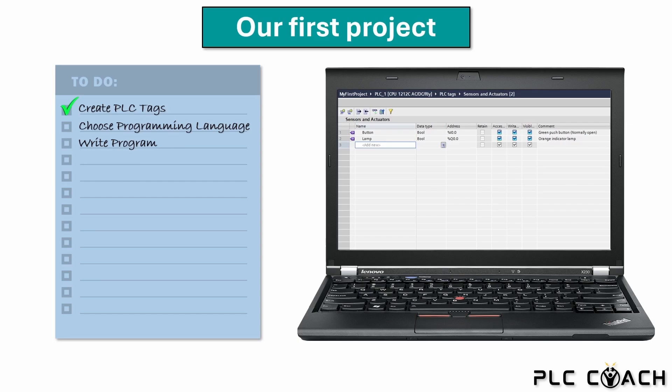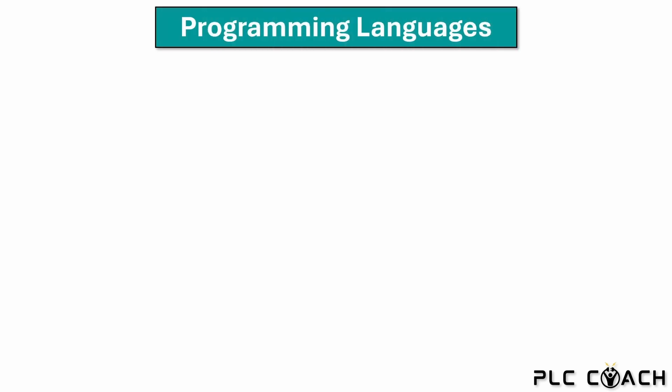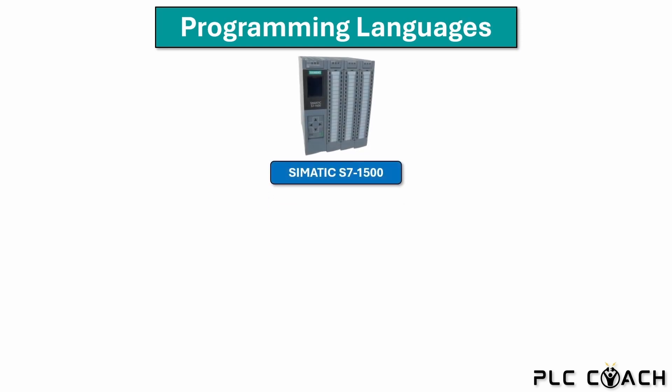The last step before we begin programming is selecting the right programming language. That's the focus of this video. Before we can choose the right programming language for our project, we first need to get familiar with all the options. A Siemens SIMATIC S7-1500 can be programmed in the following languages.